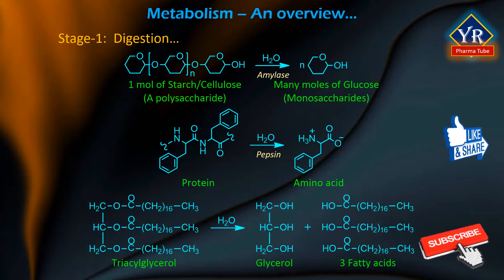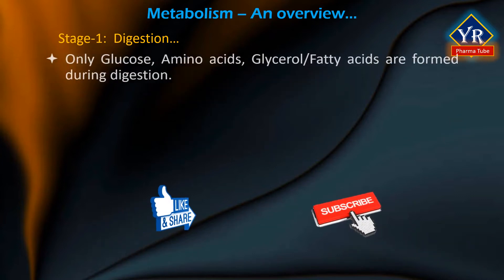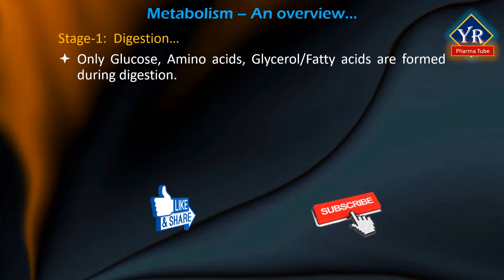Triacylglycerols, the most common lipids, are first emulsified by bile acid secreted by the liver and then hydrolyzed to glycerol and fatty acids by lipase enzyme in the small intestines. Once these small molecules — that is glucose, amino acids, glycerol or fatty acids — are formed during digestion, they are each absorbed through the intestinal wall into the bloodstream and transported to other cells in the body.